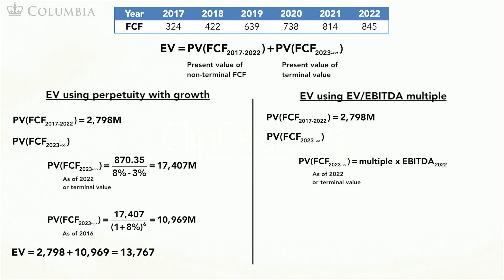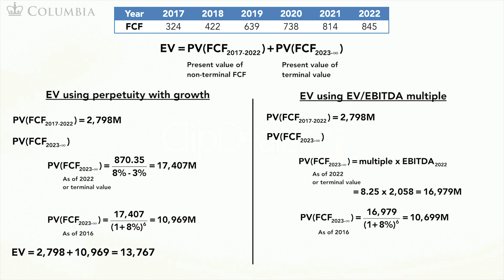Management projections specify an EBITDA of $2,058 million in 2022. Using 8.25 times as the multiple, we obtain a terminal value of $16,979 million. But this value is as of 2022, therefore discounting 6 years to 2016 leads to $10,699 million.